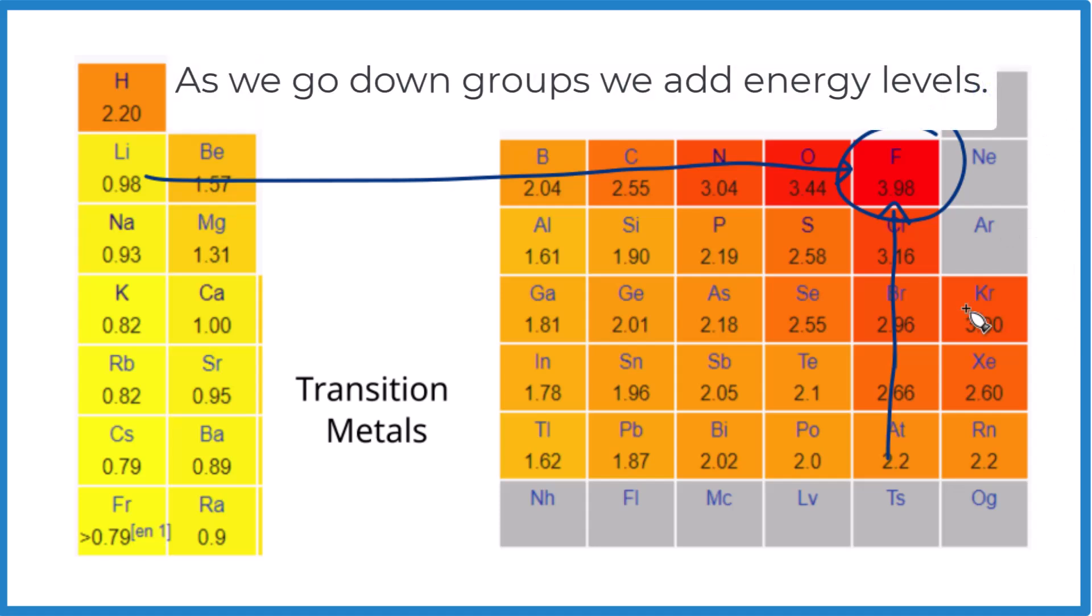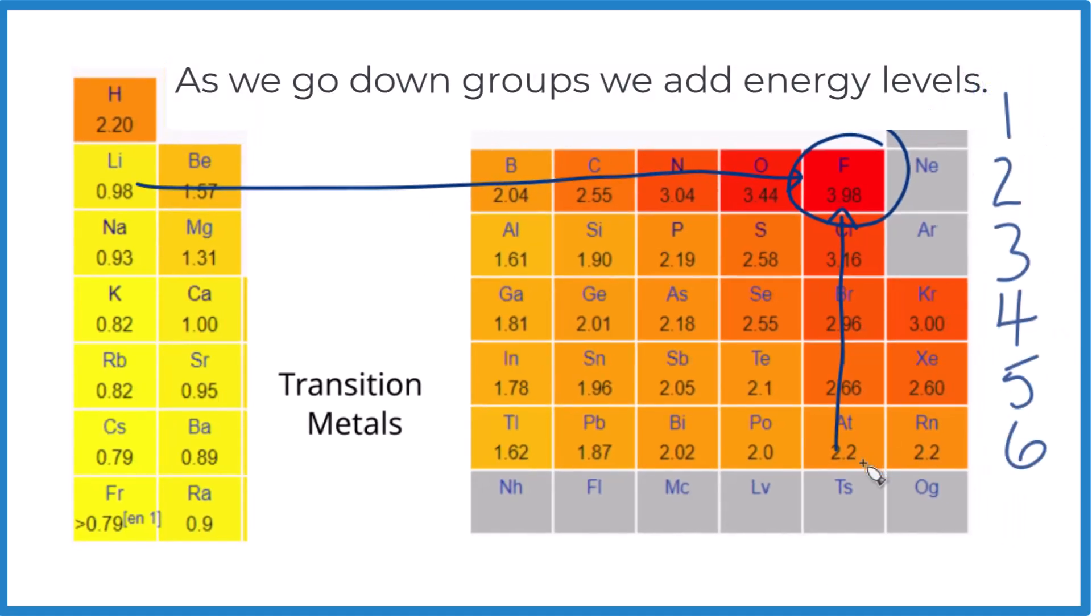The first one, as we go down, we're adding energy levels. Down here with six energy levels, we have a pretty low electronegativity. But fluorine, with only two, it's very high. In general, we ignore these noble gases. Let's visualize that.